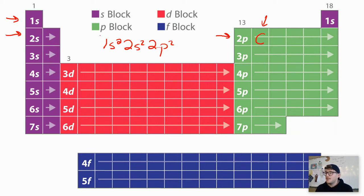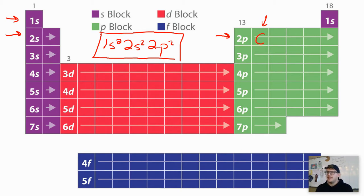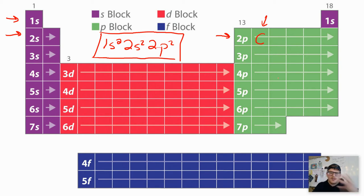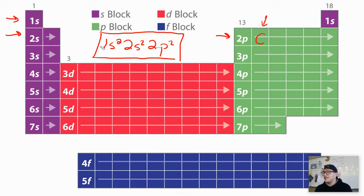What I just did was, instead of doing the electron orbital diagram, I was able to figure out the electron configuration of carbon by looking at this chart. You're going to get good at this to the point where you'll recognize, okay, this element is in the p block, third row or fourth row. You're going to get better and better at memorizing this.